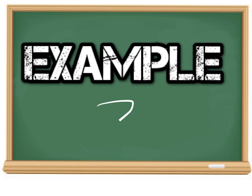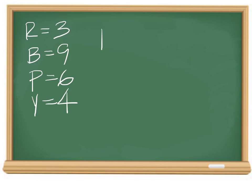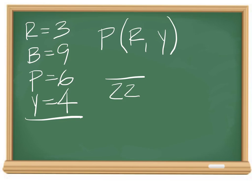Example 2. In this example, we have 3 red, 9 blue, 6 purple, and 4 yellow. We want to find the probability of selecting a red marble and then a yellow marble. How many marbles are there altogether? There are 22 marbles, and we have 3 red. So that's the probability of the first draw.